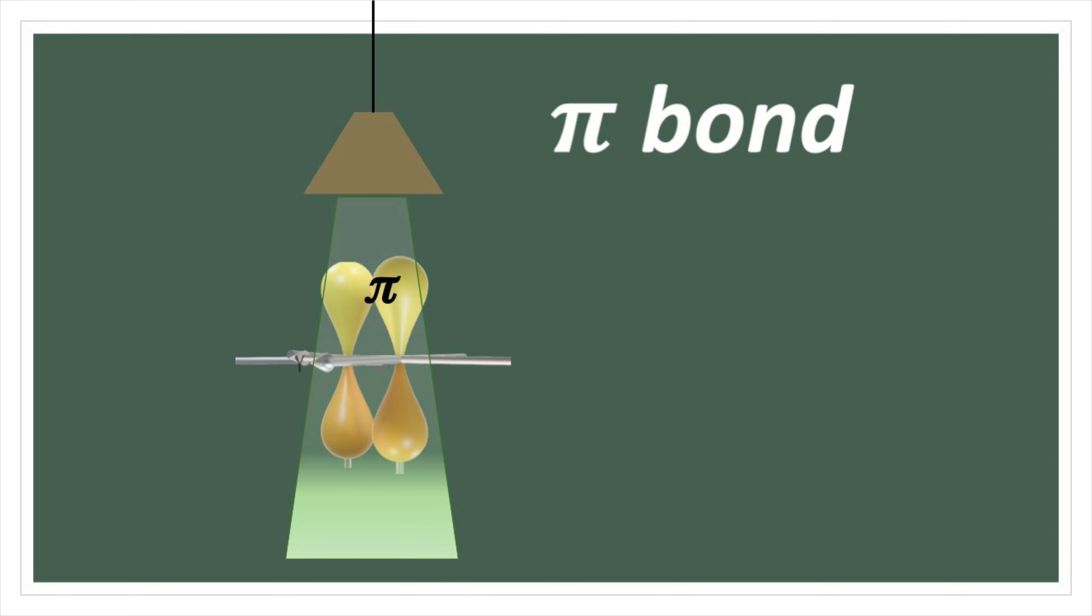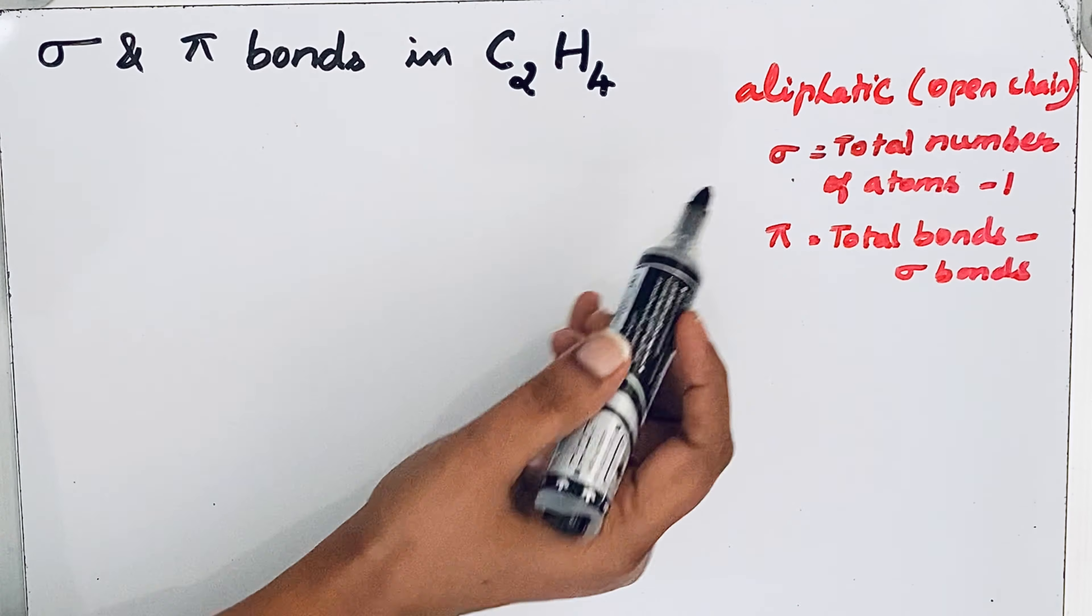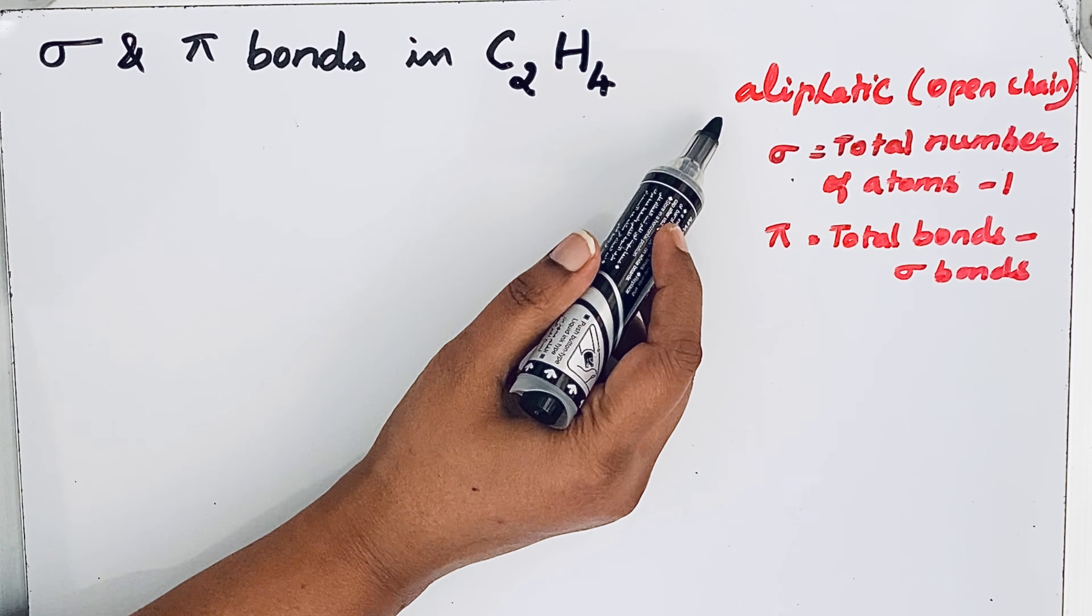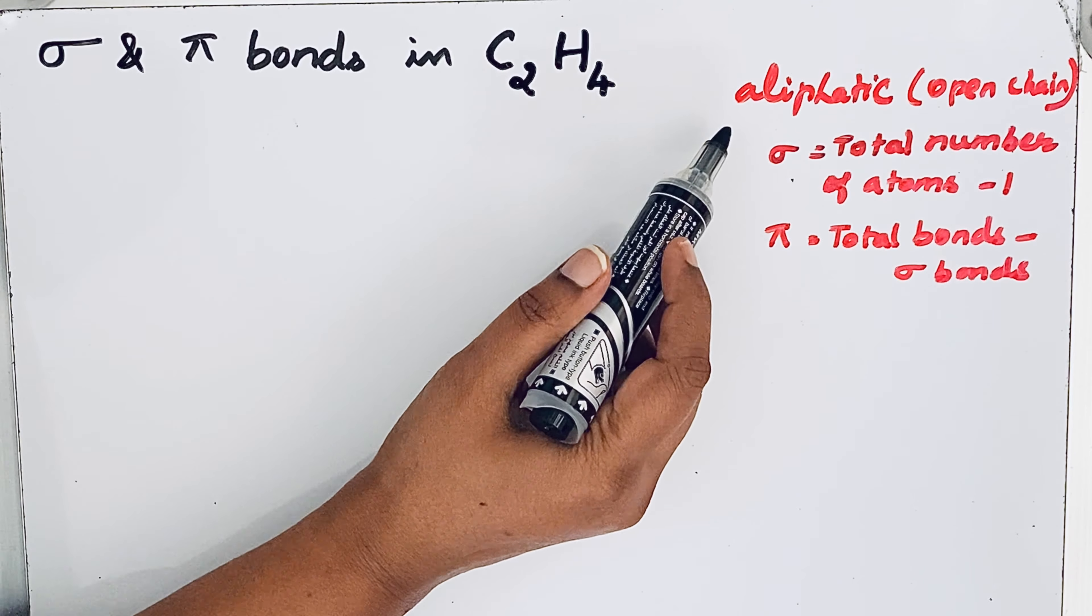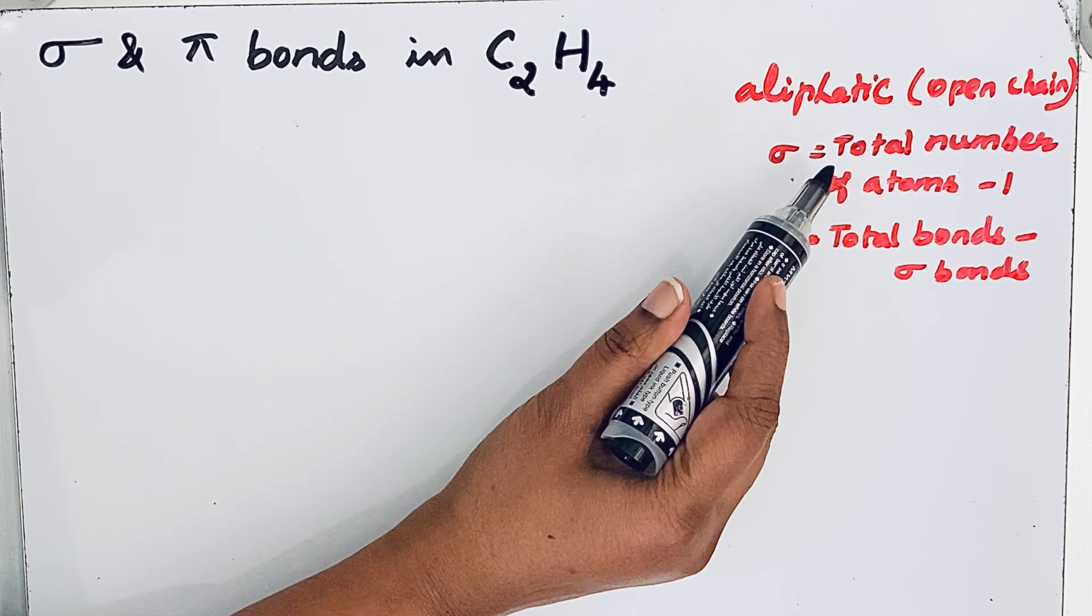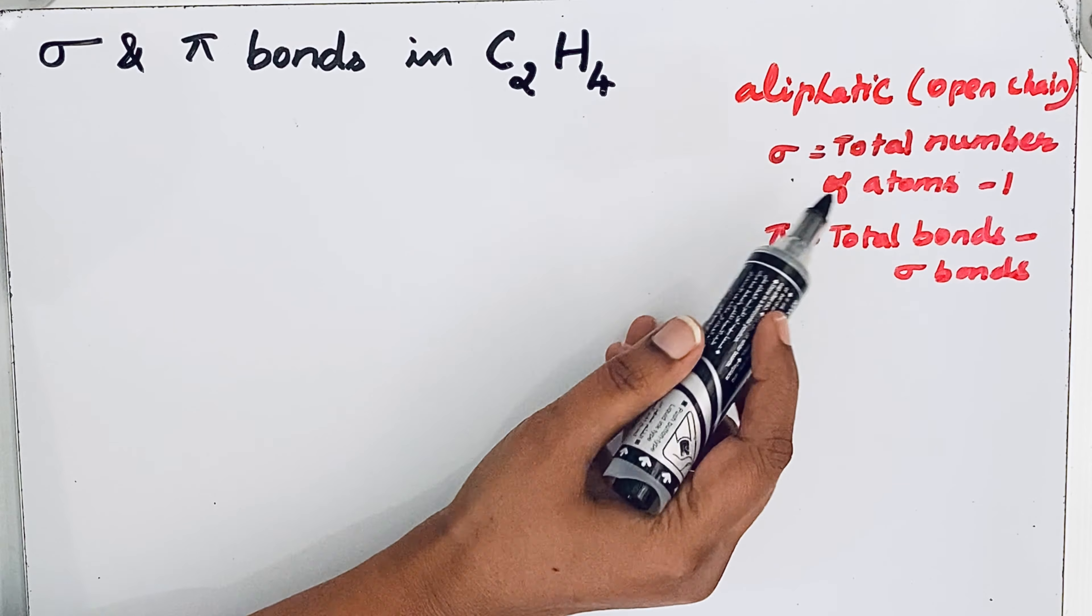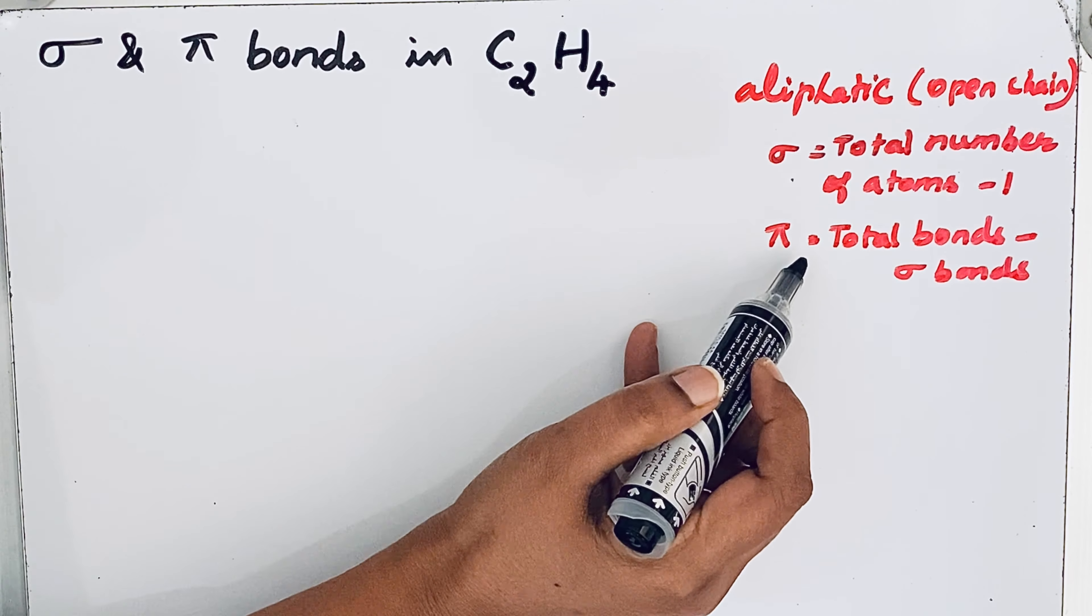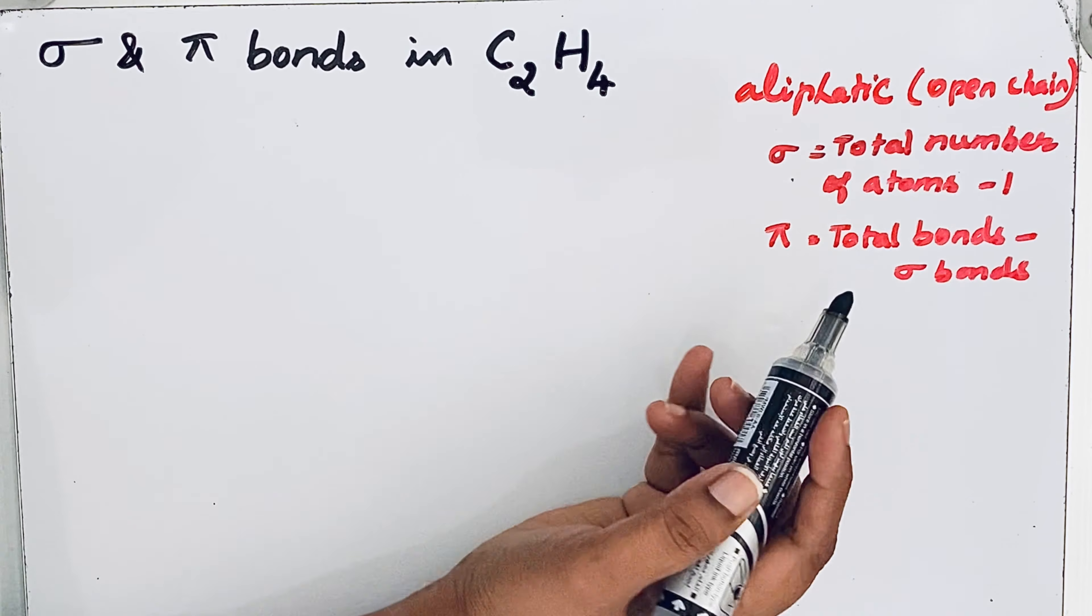To find sigma and pi bonds, there is a simple formula for aliphatic compounds. For open chain compounds, sigma bonds can be found using total number of atoms minus 1. Pi bonds equals total number of bonds minus sigma bonds.